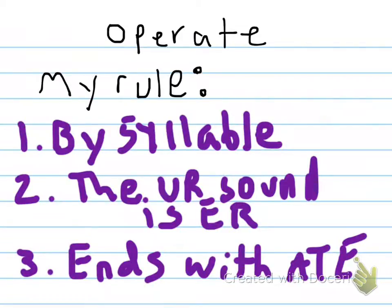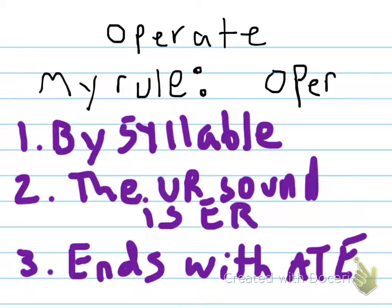Finally, you can make a rule for your word. The way I will remember 'operate' is that I'm going to spell it by syllable: op-er-ate. I start with 'op' — it looks like it sounds. Then my second rule is the ER sound is actually 'er.' And my third rule is that it ends with 'ate.' If I just internalize those three rules — going by syllable, the ER sound is ER, and it ends with 'ate' — I'll always be able to spell it.